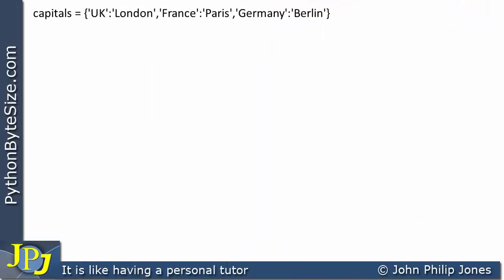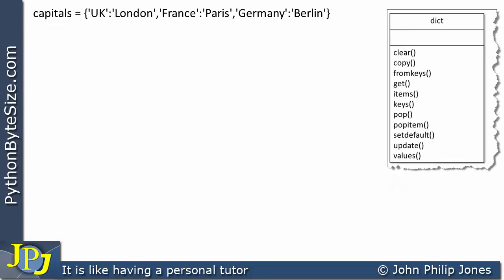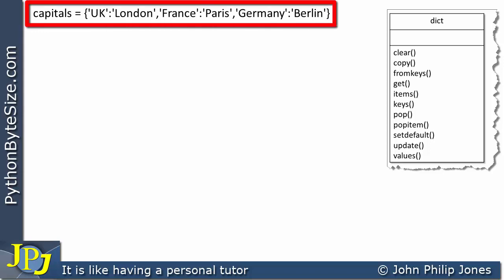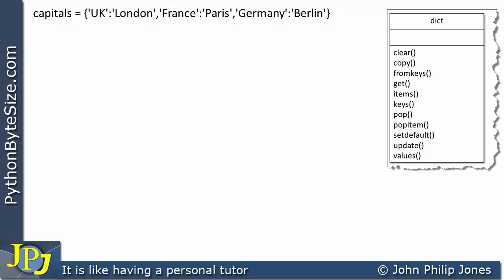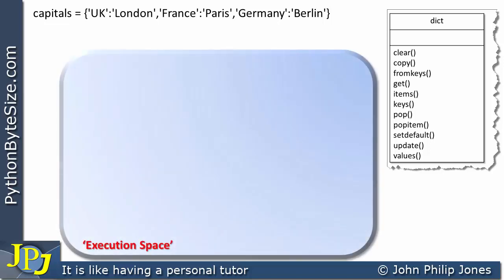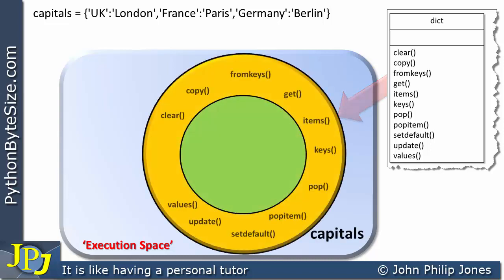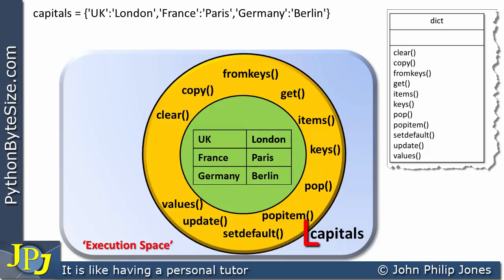This program statement will produce an instance of the dictionary class. This UML diagram appearing here is an approximation to the dictionary class. And when this particular program statement executes, it's going to create an instance of the dictionary class. We can show the concepts behind the creation of an instance of the dictionary class with the following animated schematic diagram. We'll have an execution space, and into this execution space this object will be created. The object will take up the name 'capitals', which you can see is being derived from the program statement.